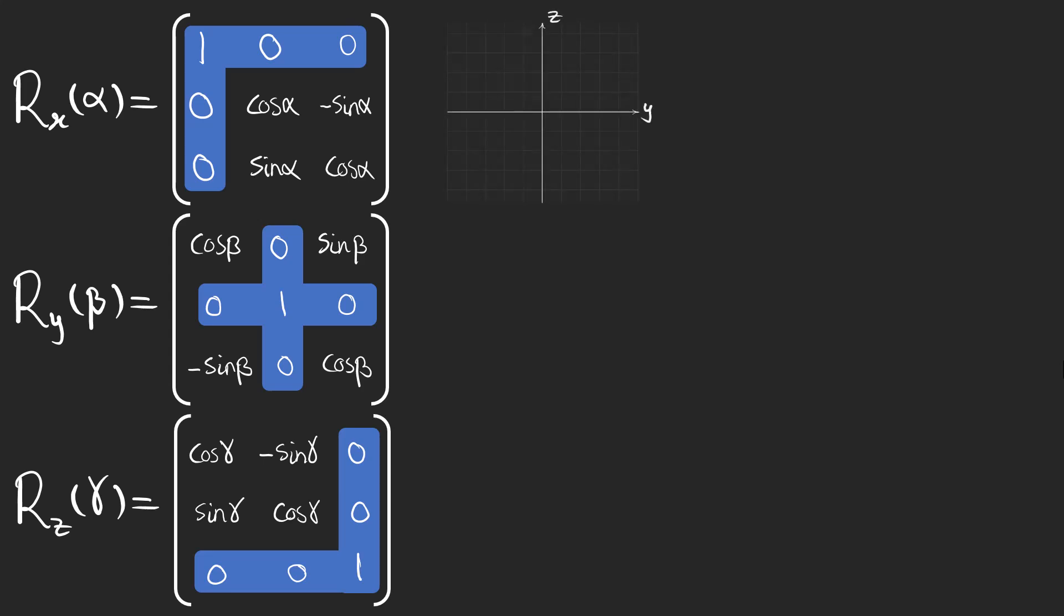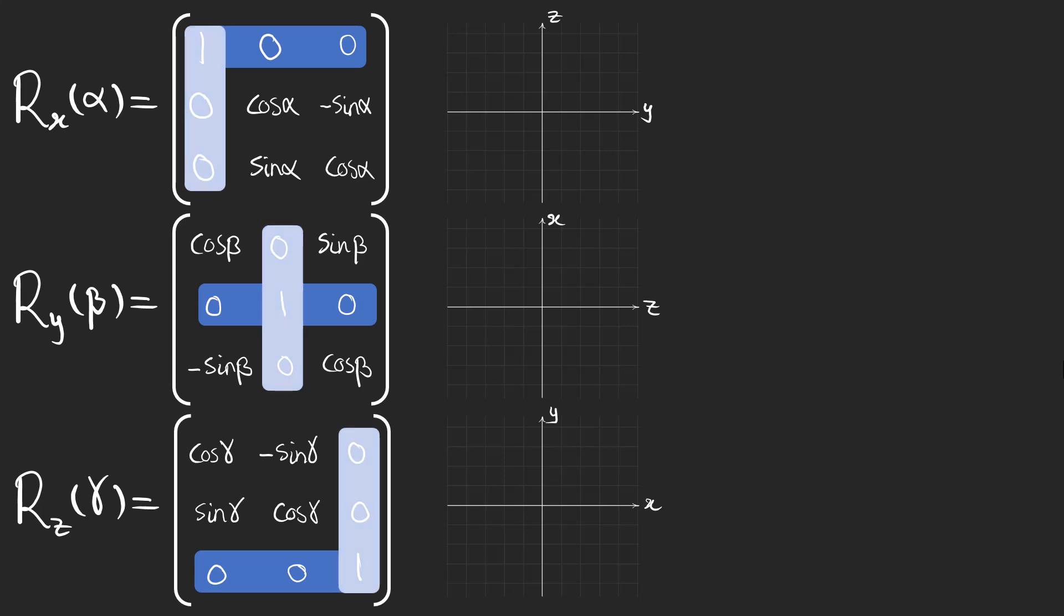For rotation about the x-axis, we are basically rotating the y-z plane. For the rotation about the y-axis, x-z plane is rotating. And when we rotate about the z-axis, the x-y plane is affected. Pay attention that the rotation about each axis doesn't change the components related to that axis.